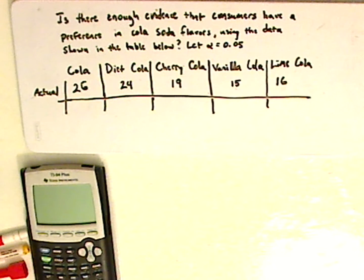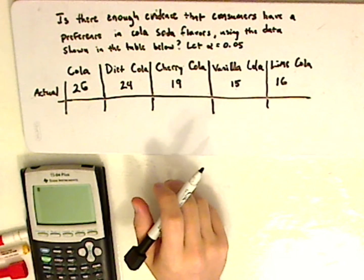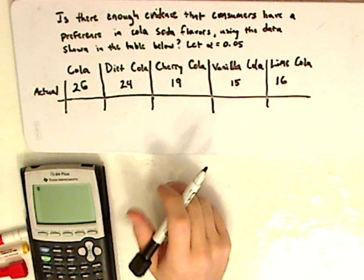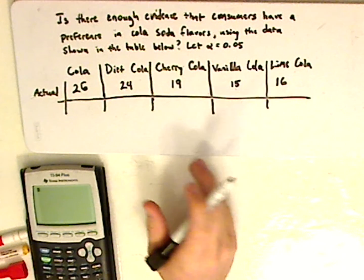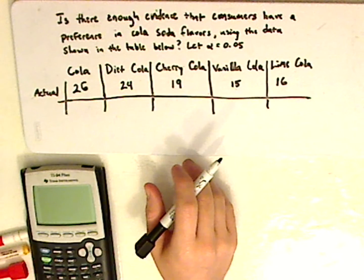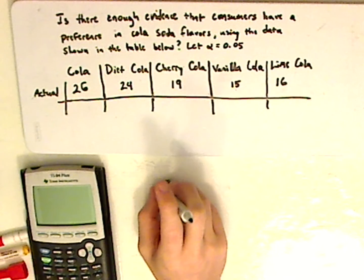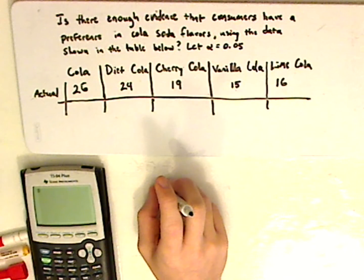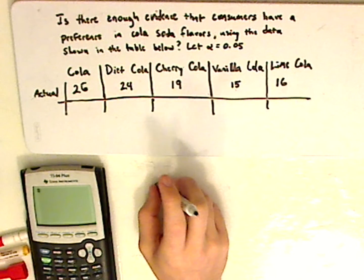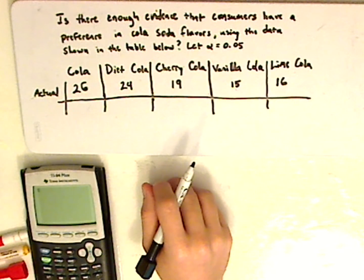Hi, I'm JD, and what we're going to be doing today is a chi-squared problem. Let me read it. It's a goodness of fit test. Is there enough evidence that consumers have a preference in cola soda flavors? Using the data shown in the table below, let alpha equal 0.05.